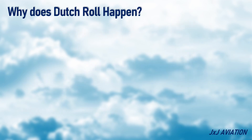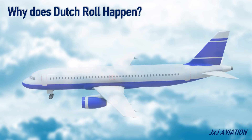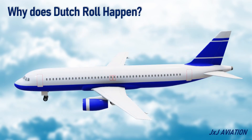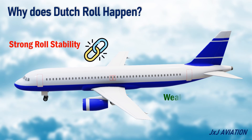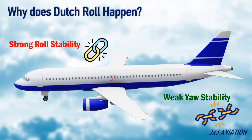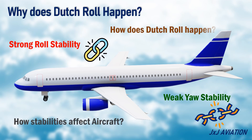Why does a Dutch Roll happen? A Dutch Roll happens in an aircraft if it has strong roll stability and weak yaw stability. Let's see how these stabilities affect an aircraft and how a Dutch Roll happens.